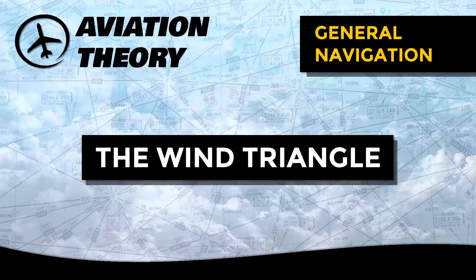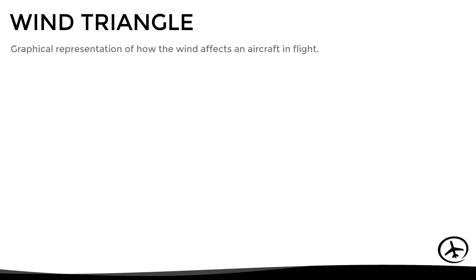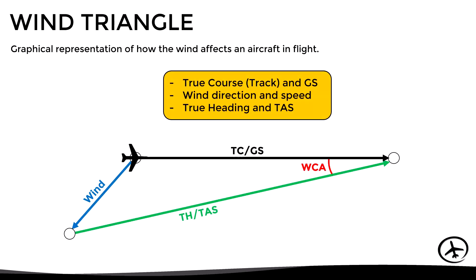Today we will talk about the wind triangle. A wind triangle is a graphical representation of how the wind affects an aircraft in flight, and it helps to determine relevant values for navigation such as wind correction angle and ground speed. This triangle is composed of the following segments: true course and ground speed, wind direction and speed, and true heading and true airspeed.